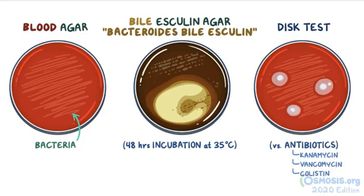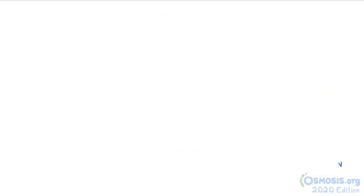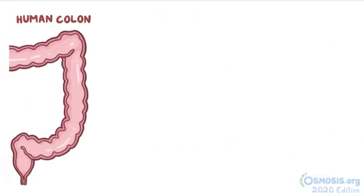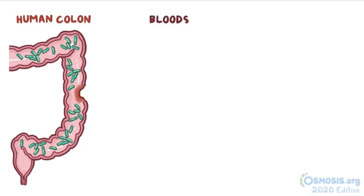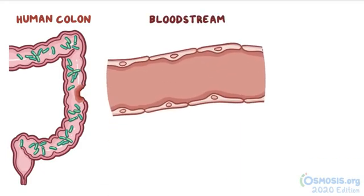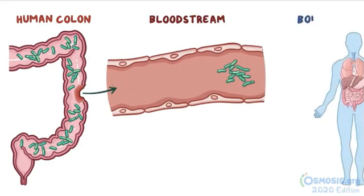Normally, Bacteroides fragilis colonizes the human colon peacefully, without causing any trouble. However, trauma or surgery may damage the intestinal wall, which allows Bacteroides fragilis to slip into the bloodstream. From there, it can travel to virtually any organ in the body.